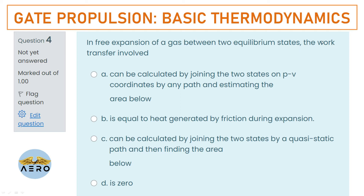If the pressure is zero, then the work done by that particular free expansion will also be zero. The right option is option D.